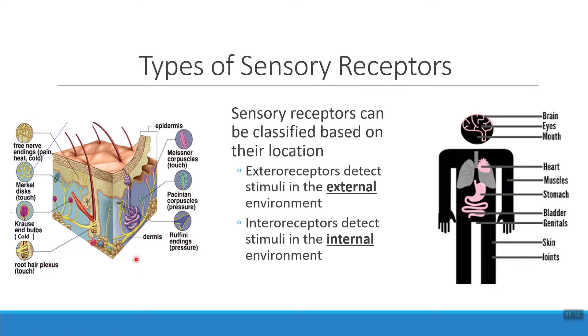The opposite of an exteroceptor is an interoceptor. Interoceptors are monitoring the internal environment of the body. These are the kinds of receptors that are checking your stomach to see how full it is, or monitoring your heart rate, keeping track of what's happening inside your muscles and joints. All of the receptors we will talk about in this chapter are either an exteroceptor or an interoceptor — everybody is either detecting something from outside or something on the inside.